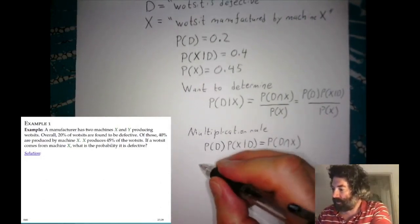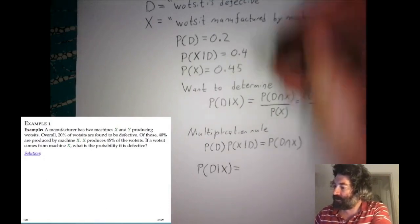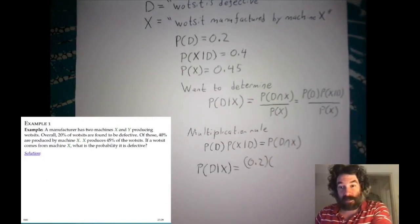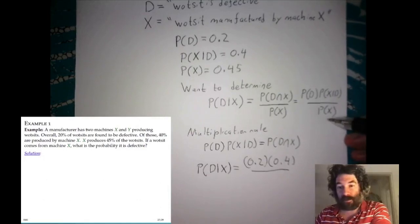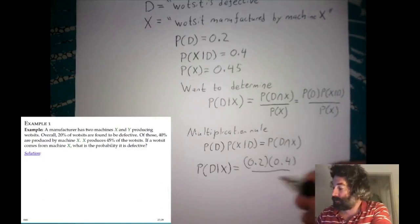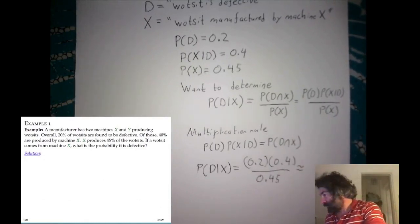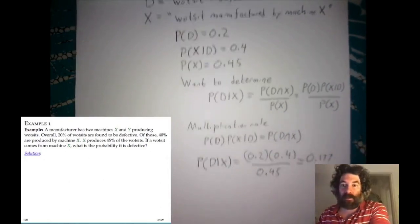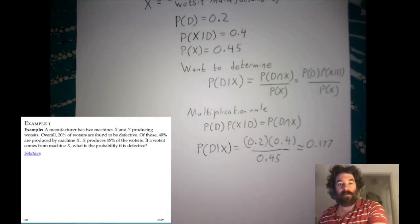The probability that a widget is defective given it was produced by machine X equals P(D) times P(X|D) divided by P(X), which is 0.2 times 0.4 divided by 0.45. Putting these into the calculator gives approximately 0.177. So the probability that a widget is defective given it was produced by machine X is approximately 17.7%. That's the solution to the first example.